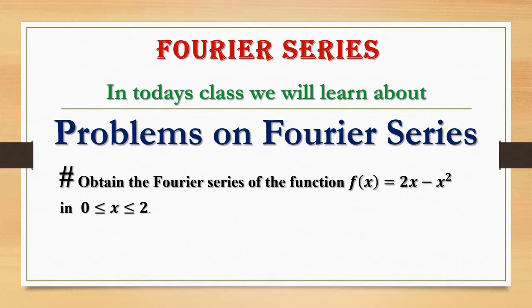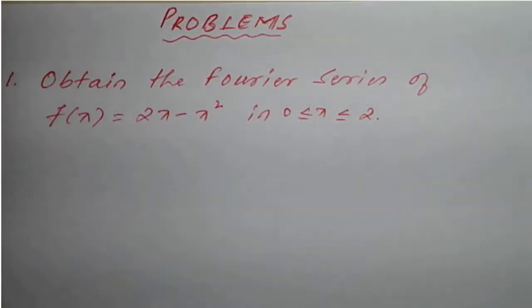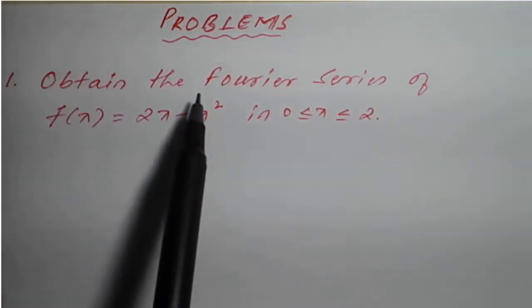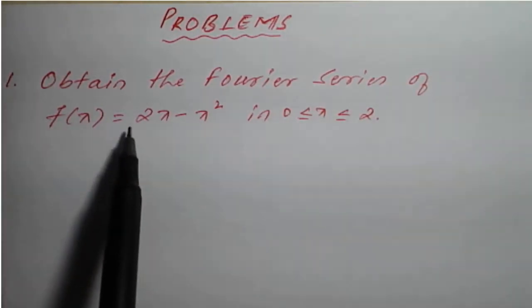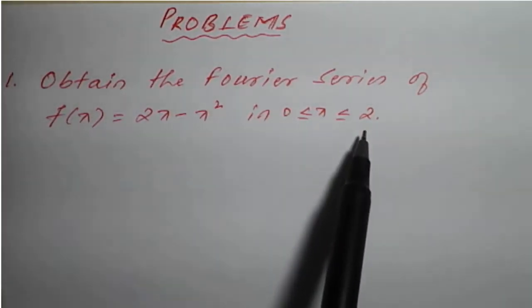In today's lecture, we will learn about problems on Fourier series. The problem is: obtain the Fourier series of the function f(x) = 2x minus x² in the interval 0 ≤ x ≤ 2.